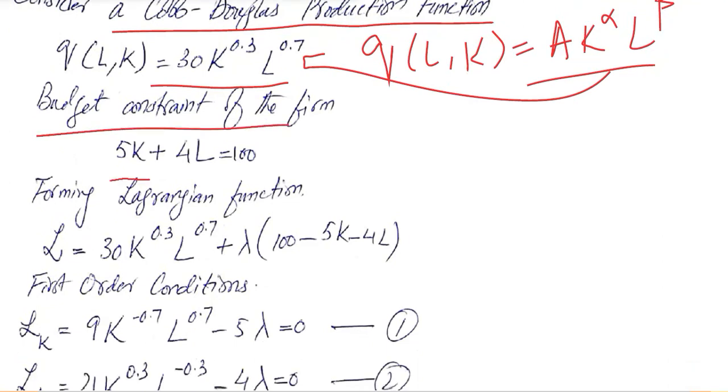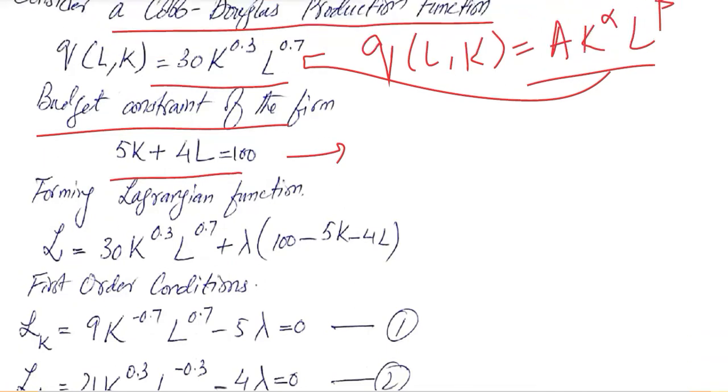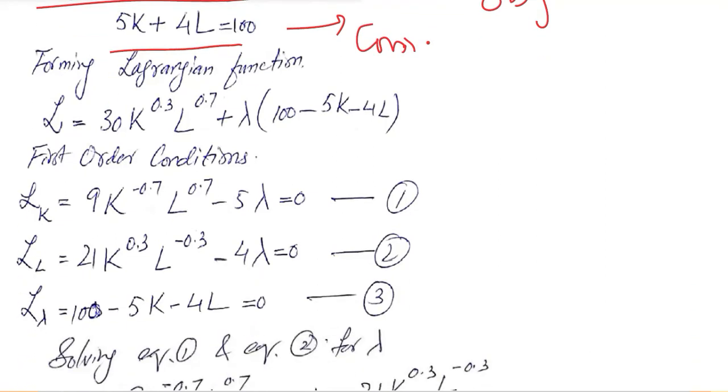This is the budget constraint of the firm, so budget constraint is also available. Now we have the objective function as well as the constraint function. Definitely we can do the optimization by using the Lagrangian function. This is the Lagrangian function, the objective function, and this is the budget constraint which is now multiplied with the Lagrangian multiplier.